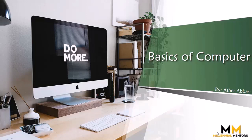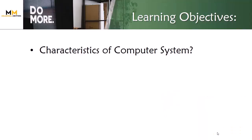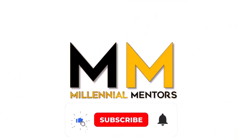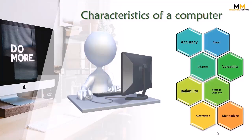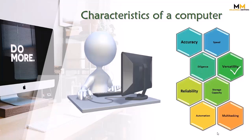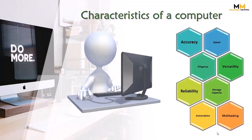Hello viewers, in this video tutorial we are going to discuss and learn about characteristics of a computer system. The characteristics of a computer are: accuracy, speed, diligence, versatility, reliability, storage capacity, automation, and multitasking. These are the characteristics of a computer.